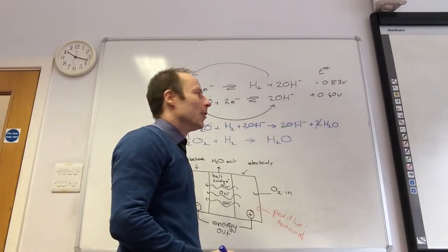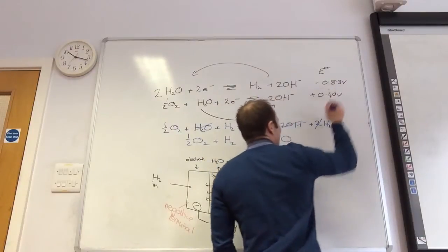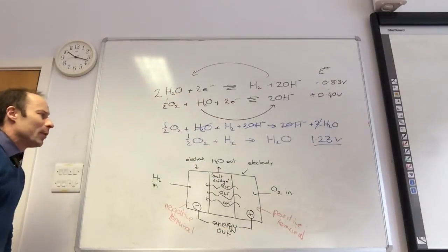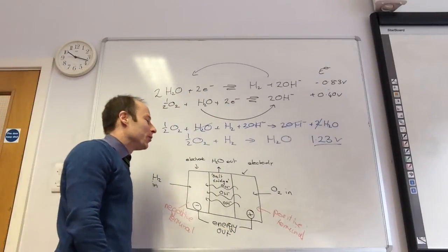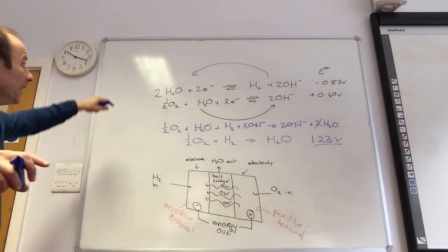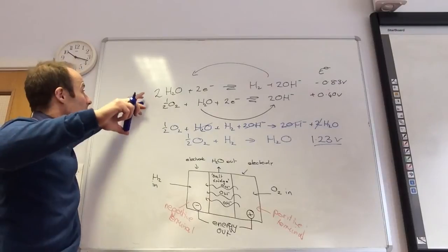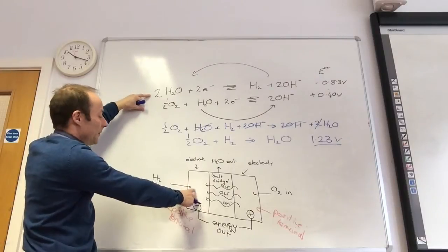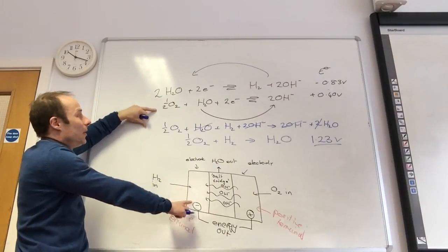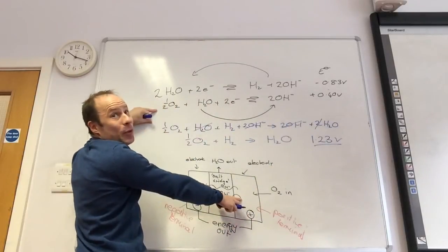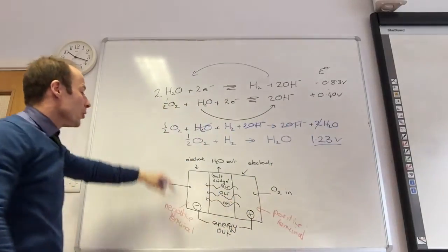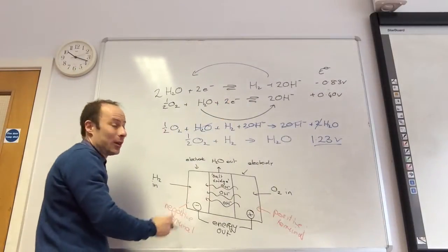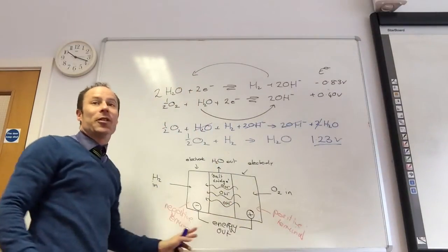What will my voltage be for that cell? The difference between the two E° values is 1.23 volts. So I get 1.23 volts from my overall cell reaction. This one is more negative, so that's why it is my negative terminal. This one here is positive, so that's my positive terminal. You match them up: my negative one is the hydrogen electrode and my positive one is the oxygen electrode.